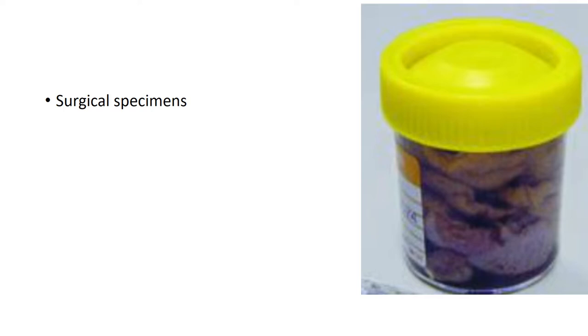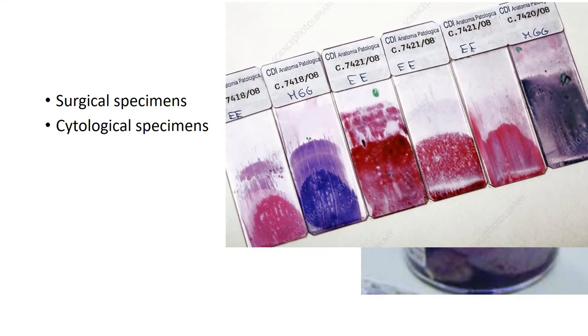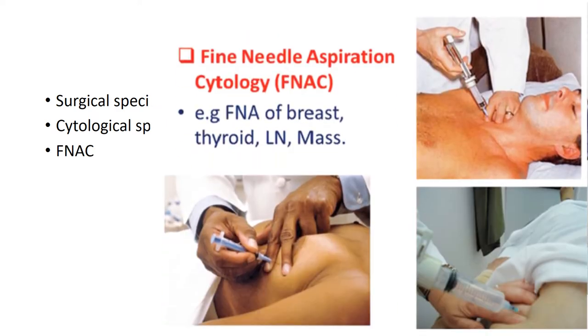In the pathology lab we send surgical specimens — that is biopsy specimens, large biopsy specimens and small biopsy specimens. We also have cytological specimens: slides made in the office are fixed and sent to the laboratory, or FNAC for superficial subcutaneous lumps. Patients are sent to the laboratory where cytology slides are made and interpreted.